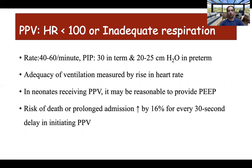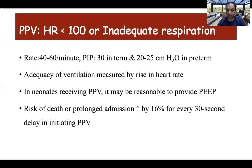The indication for positive pressure ventilation is a heart rate less than 100 beats per minute, inadequate respiration, or apnea. The rate is usually 40 to 60 per minute. Peak inspiratory pressure up to 30 cmH2O should be considered in term babies and up to 20 to 25 cmH2O in preterm babies, avoiding excessive pressures as they are associated with increased lung and brain injury. The best measure of effective ventilation is a rise in heart rate. Babies requiring PPV should be started on PEEP to establish functional residual capacity and prevent atelectrauma. Risk of death or prolonged admission increases by 16 percent for every 30-second delay in initiating positive pressure ventilation.